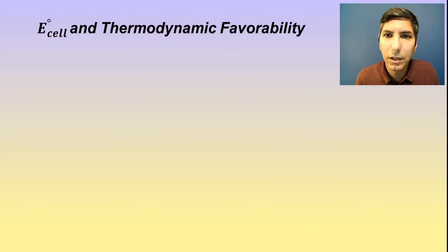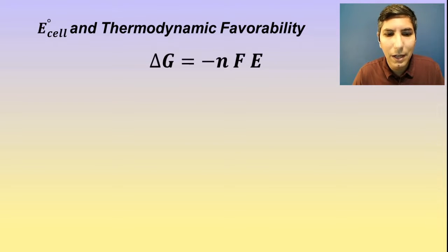Now in the last couple videos, we've been learning about how to calculate E cell, the potential difference for a galvanic cell, and in this video we're going to talk about how to determine the thermodynamic favorability of those cells. Here's the equation that we're going to use: ΔG equals negative nFE.